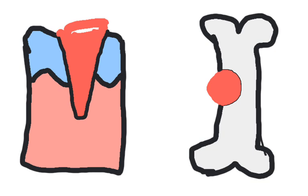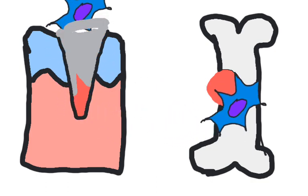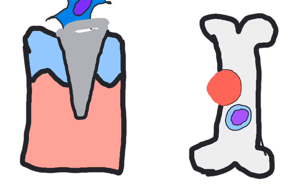In both tissues, the clot recruits mesenchymal stem cells into the area. In skin they differentiate into fibroblasts and lay down scar tissue, whereas in bone tissue the stem cells differentiate into chondroblasts and lay down fibrocartilage or a soft callus.